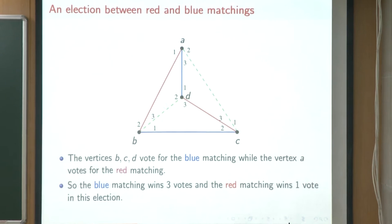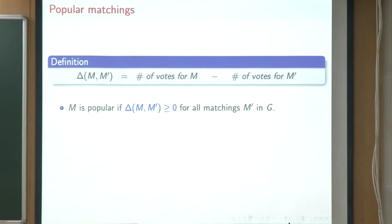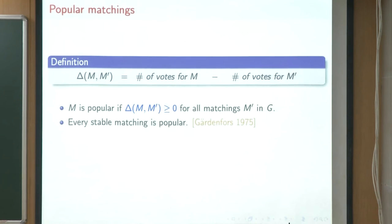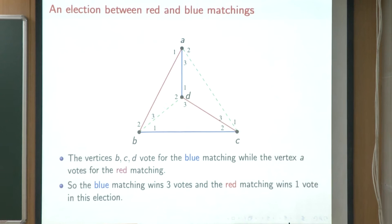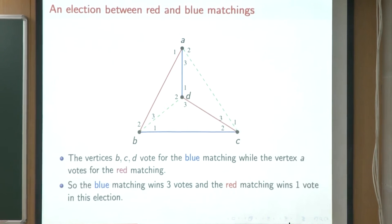In this head-to-head election, the blue matching wins three votes and the red matching wins one vote. We compare two matchings by looking at the difference between the votes one matching obtains and the other in their head-to-head election. A matching is popular if it never loses to any matching — it loses to a matching if this difference is strictly negative, meaning the other matching obtains more votes. The vote count just sums over all vertices; in the red versus blue election, blue got the votes of B, C, and D — three votes — and red got one vote. So delta(red, blue) would be minus two, and red for sure is not popular.